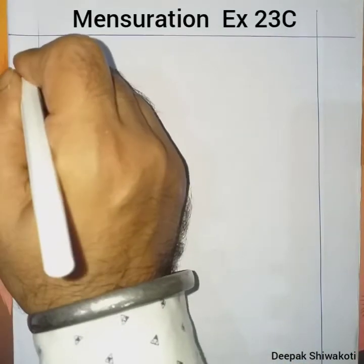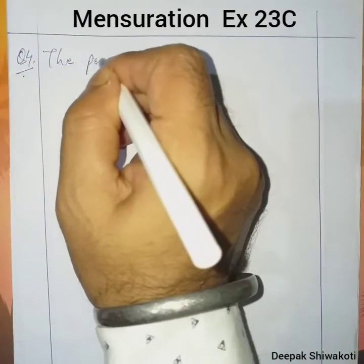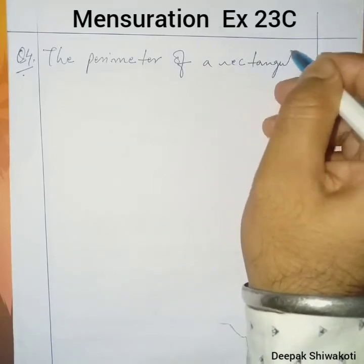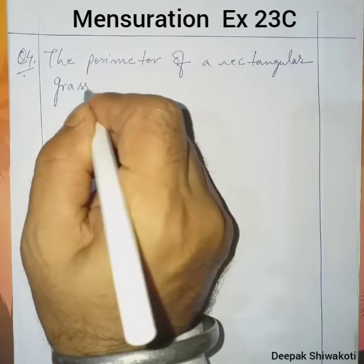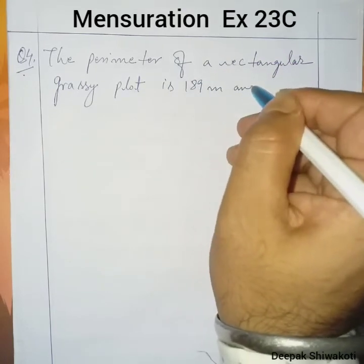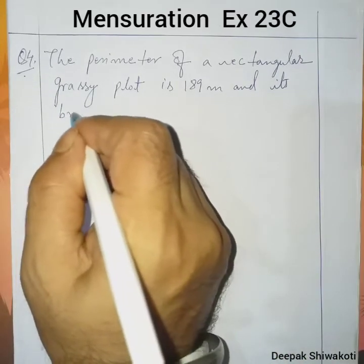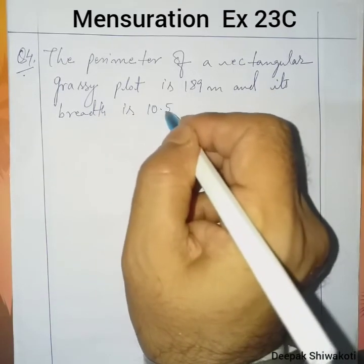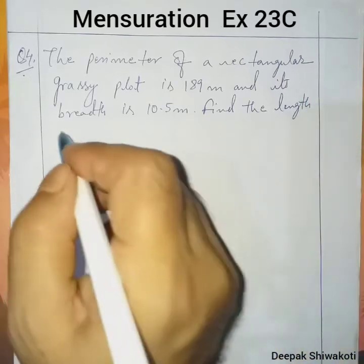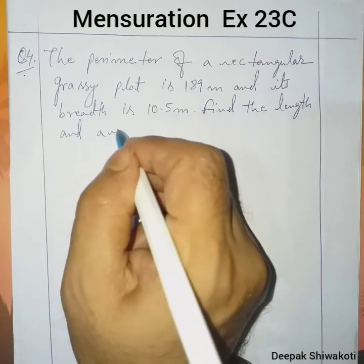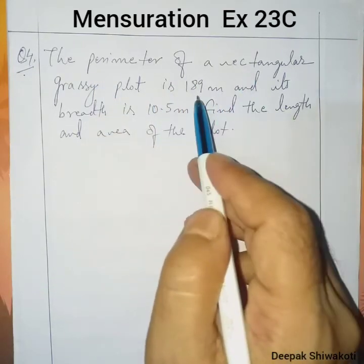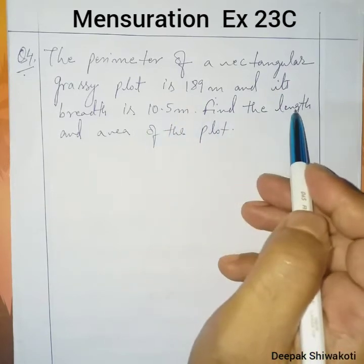Question number 4: The perimeter of a rectangular grassy plot is 189 meter and its breadth is 10.5 meter. Find the length and area of the plot. So in this question, perimeter of the rectangle is given and breadth is given; we have to find length and area.